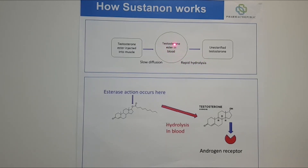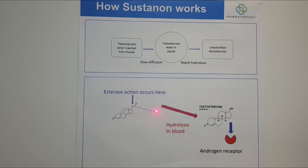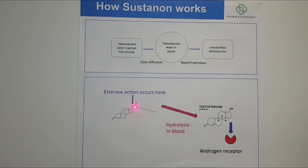Once the testosterone ester is in the blood there is a rapid hydrolysis. What that means is the testosterone ester is broken down to the unesterified testosterone. If we look at what actually happens at the molecular level, this is the chemical formula for testosterone decanoate. We know it's decanoate because we've got 10 carbon atoms in this ester side chain. An esterase enzyme in the blood acts here to cleave this ester side chain, and remember this hydrolysis in the blood is rapid, and then we get the testosterone hormone.